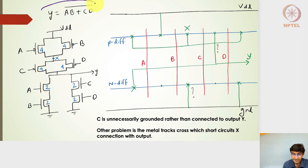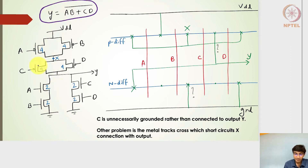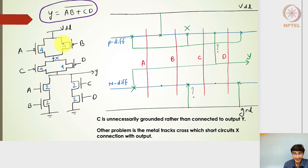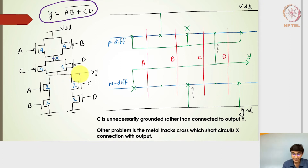Moving ahead, let's look at the combinational circuit Y = AB + CD. In the schematic, AB are in series on the pull-down side, in parallel with CD also in series, connected to the output node Y. Using complementary topology, A and B in series become parallel on the pull-up side, and C and D in series become parallel on the pull-up side. I have labeled an intermediate diffusion node as X and the other side as Y. The stick diagram has a VDD rail, a ground rail, P diffusion lines, and N diffusion lines.